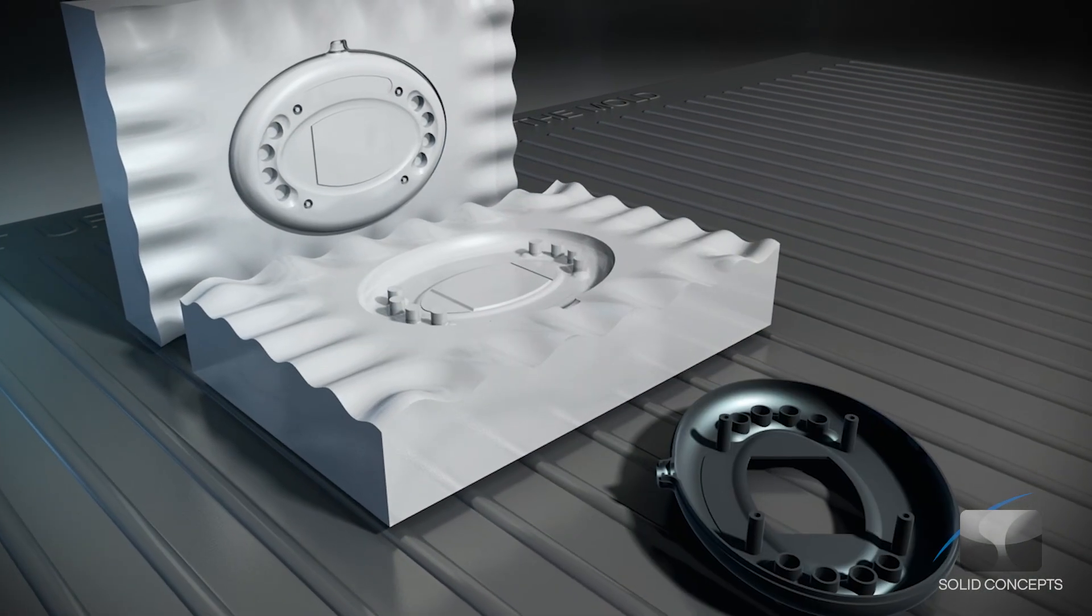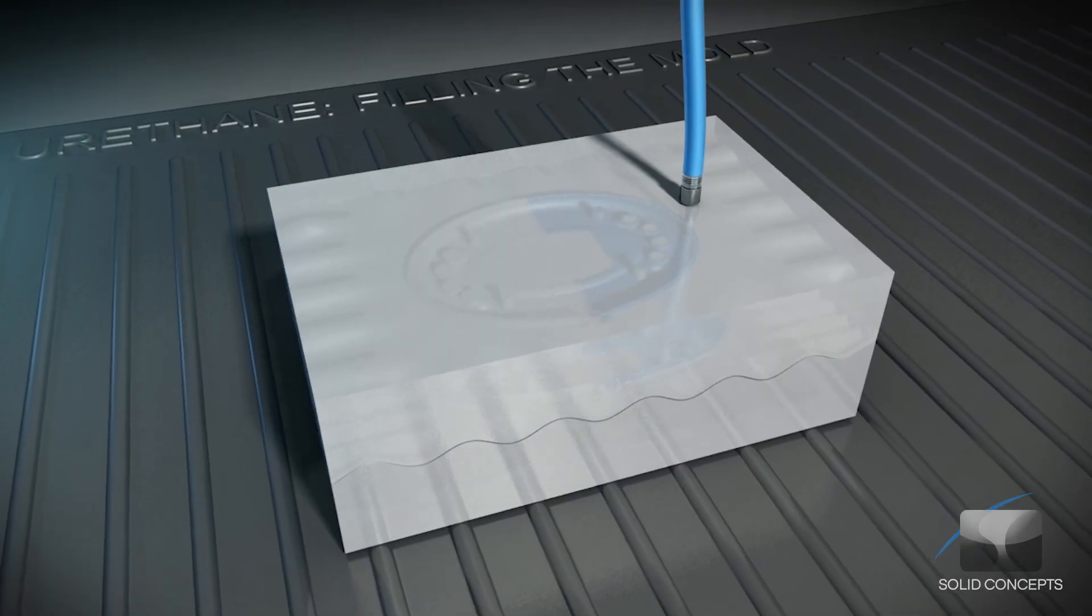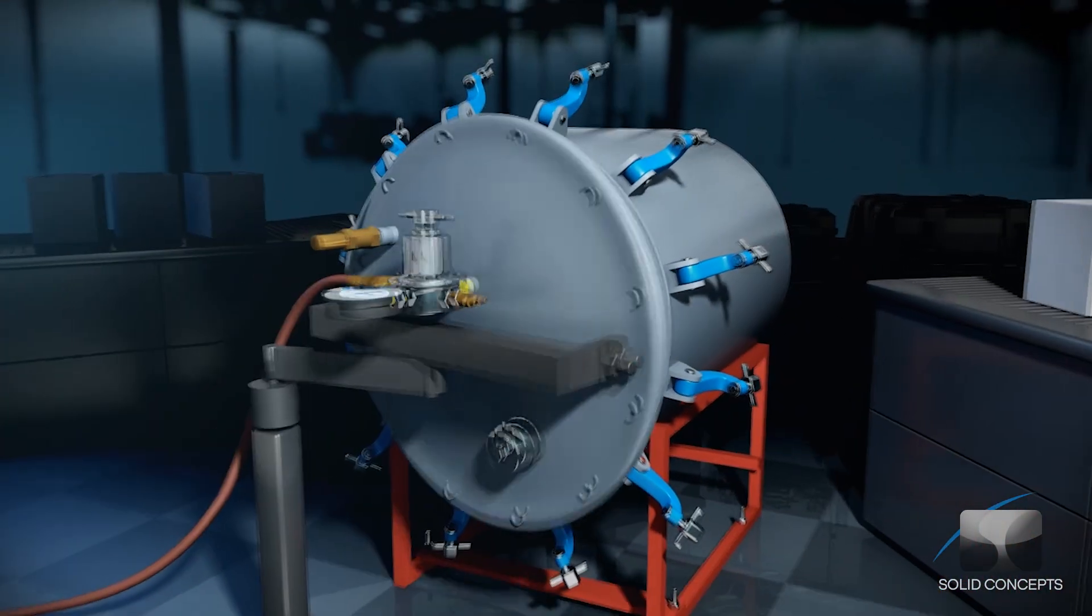The two halves of the newly created mold are reassembled, filled with a two part liquid polyurethane and then placed in a pressure chamber at an elevated temperature to enhance mechanical properties.